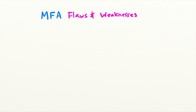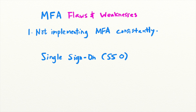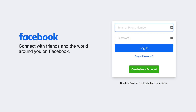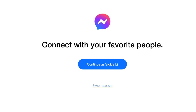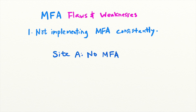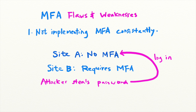The first mistake developers can make is not implementing MFA across all services within a single sign-on system. Single sign-on, or SSO, is a feature that allows you to access multiple services that belong to the same company without logging in multiple times. For example, if you are logged into Facebook, you won't have to re-enter your credentials to use Messenger. If one site requires MFA while another site of the same SSO system does not, attackers can log into that site that does not require MFA to bypass the protection. For example, if Site A does not require MFA while Site B does, an attacker who can compromise a user's password to Site A can log into the user's account on Site B by logging into Site A first, bypassing the MFA requirements on Site B.